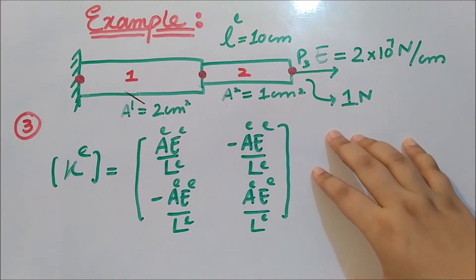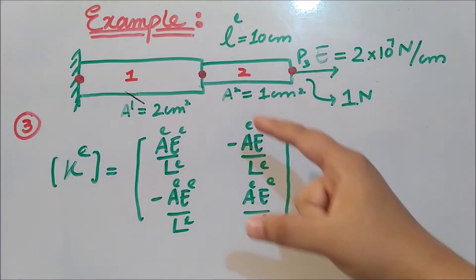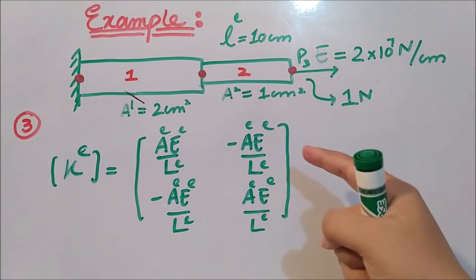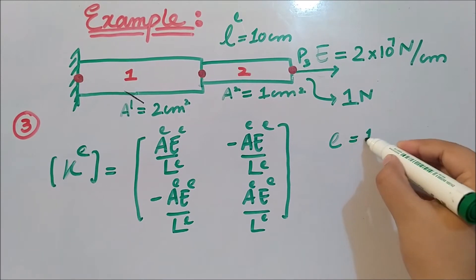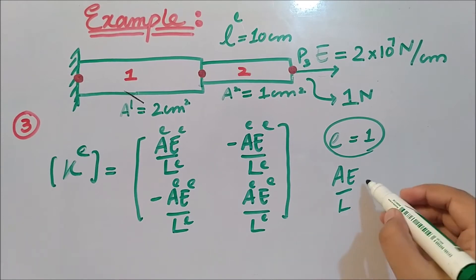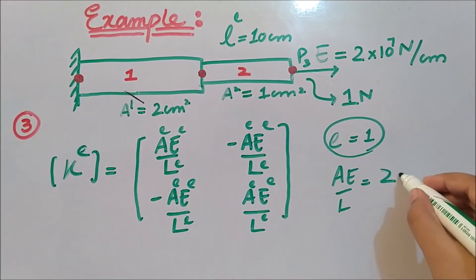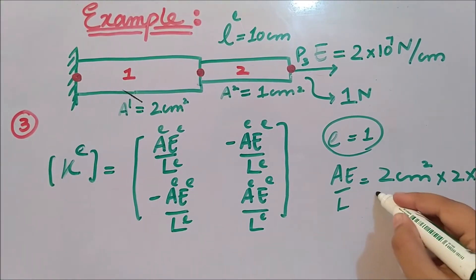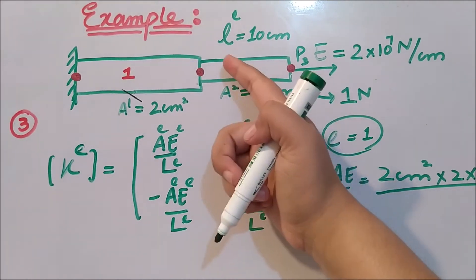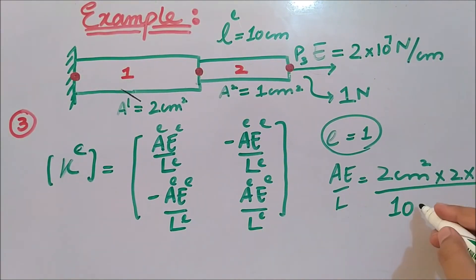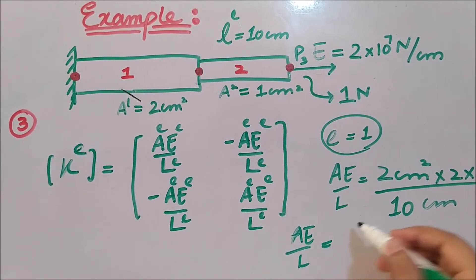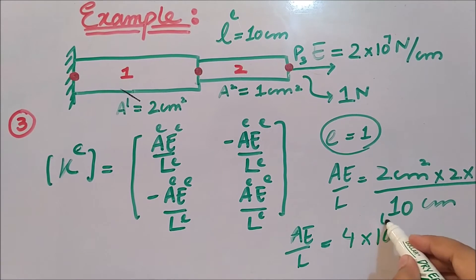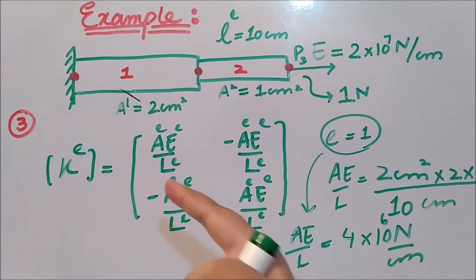For the element-level stiffness matrix, we compute AE/L for each element. For element 1: A1 = 2 cm², E = 2×10⁷ N/cm², L = 10 cm. So AE/L = (2 × 2×10⁷) / 10 = 4×10⁶ N/cm. Plugging this into the standard 2×2 stiffness matrix gives us the stiffness matrix for element 1.